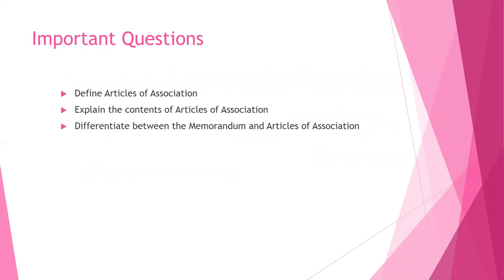Let's move on to the most likely examination questions. With this understanding you will be able to answer: 'Define Articles of Association' — when defining, don't forget to mention it is according to the Companies Act 2013, Section 2, Subsection 5. Next, 'Explain the contents of Articles of Association,' covering all the contents discussed. You can also expect the question: 'Differentiate between Memorandum of Association and Articles of Association.' Dear students, I hope this session has helped you in understanding and will help you in your examination. Best wishes for your learning process. Thank you all.